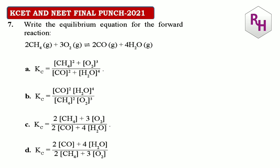The equilibrium equation: Kc is written using stoichiometric coefficients as powers. So it's CO to the power 2, H2O to the power 4, divided by CH4 to the power 2 and O2 to the power 3. The answer for this question is B.